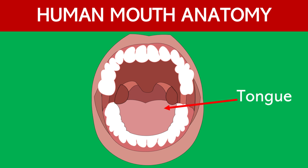Tongue. The tongue is a muscular organ that aids in tasting, chewing, swallowing — also known as deglutition — and speaking. It has taste buds that detect different flavors.